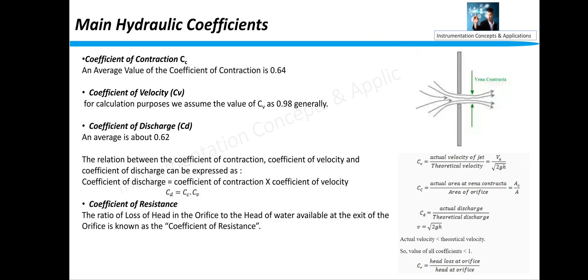Coefficient of velocity: that should be 0.98. And coefficient of discharge, this is important. Coefficient of discharge is coefficient of contraction into coefficient of velocity. CD is equal to CC into CV. So this value should be around 0.62. And these are some theoretical formulas you may read. And all the coefficient values should be less than 1. That is the thumb rule.